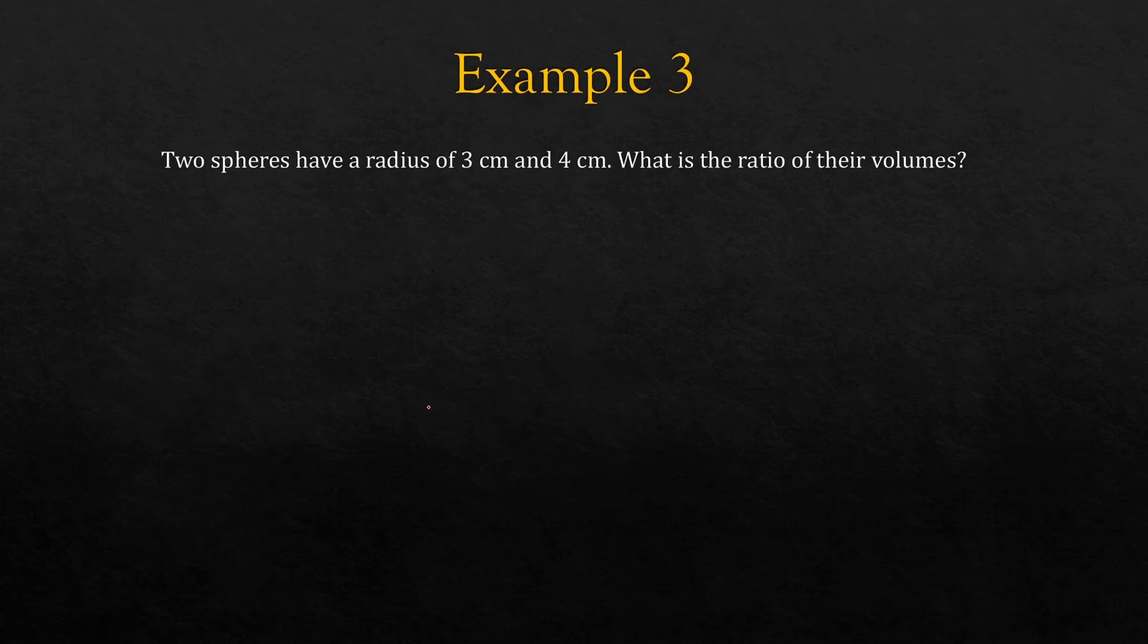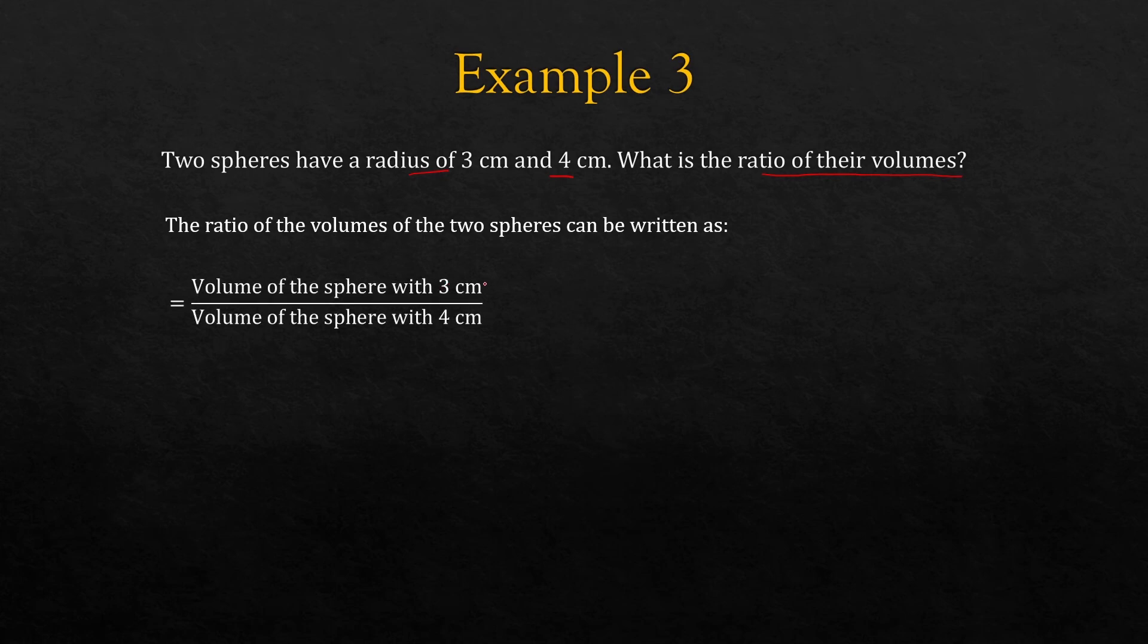Another example. We have two spheres. The radius is 3 and 4. What is the ratio of their volumes? So the ratio of the volumes of the two spheres can be written as the volume of the first sphere which is 3 centimeters, the radius is 3 centimeters, and then the radius of the second one is 4 centimeters. We put that in the denominator.